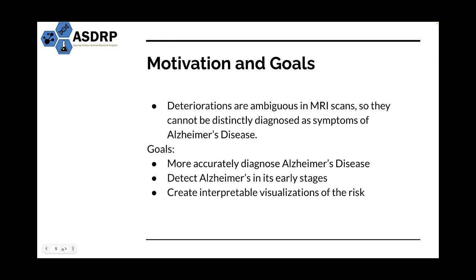These deteriorations are often unclear in MRI scans, especially when the disease is in its early stages, so it becomes hard to diagnose. We wanted to come up with a way in which a machine learning algorithm would read the scans and accurately diagnose the disease in its early stages. By creating interpretable visualizations of the risk, even if there's no cure, patients with Alzheimer's can get early access to treatment, and medications can help limit memory loss and reduce decline in the brain and its functions. In this way, patients can have more chances to make changes in their lifestyle.